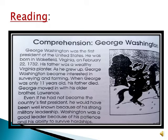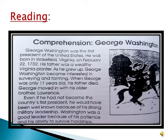The first paragraph tells us where he was born — he was born in Wakefield, Virginia on February 22, 1732. His father was very rich. When George grew up he was more interested in surveying and farming. Surveying means measurement of land. But when he was only 11 years old his father died, and then he moved in with his older brother Lawrence.